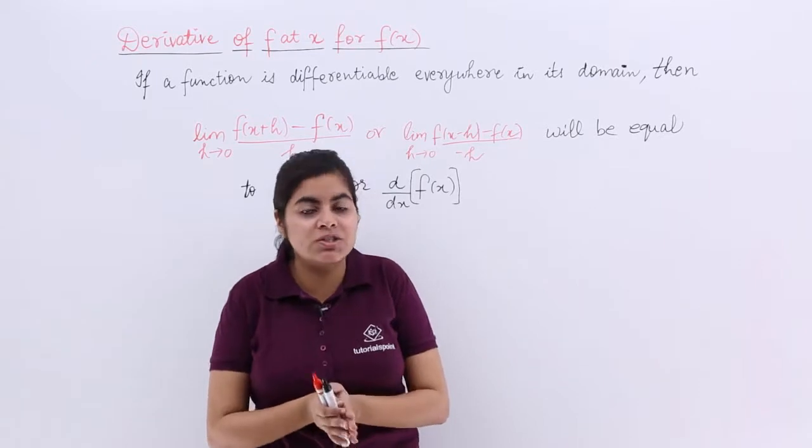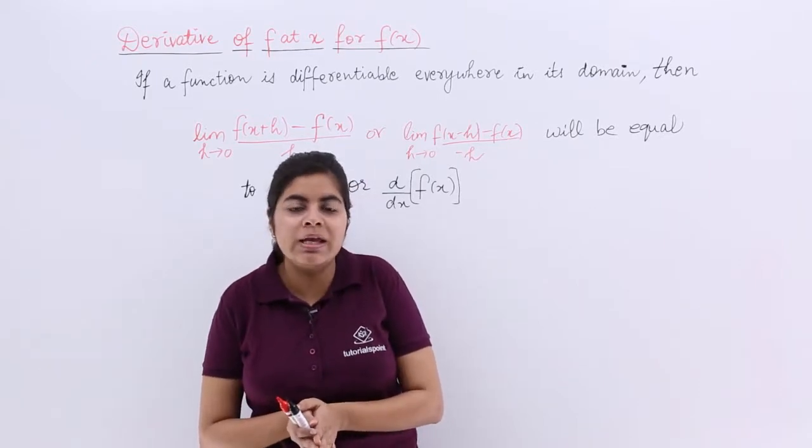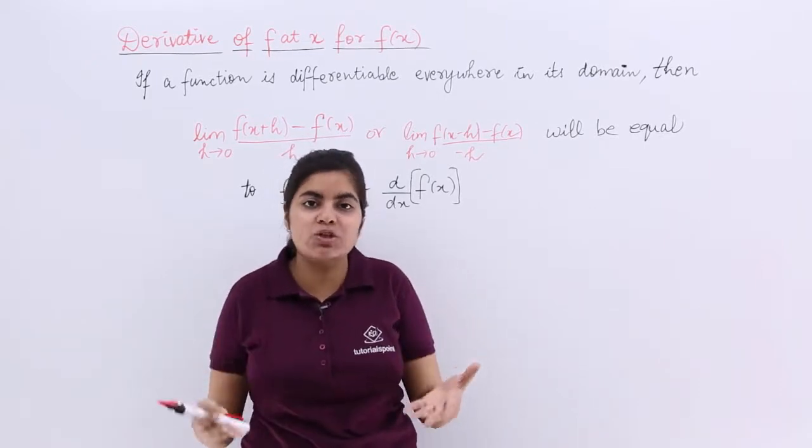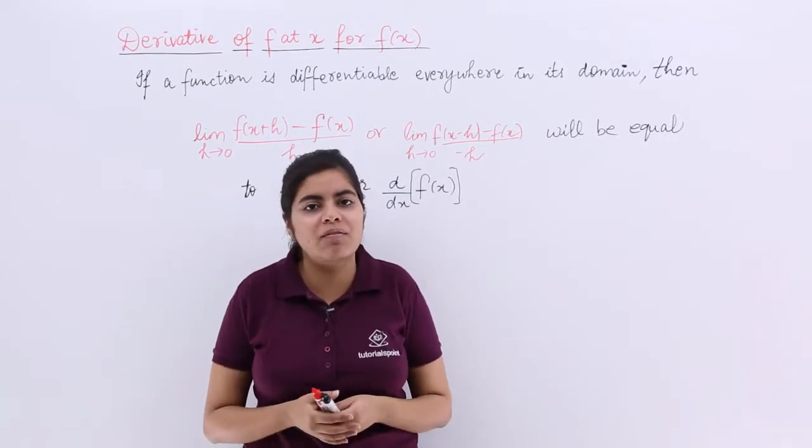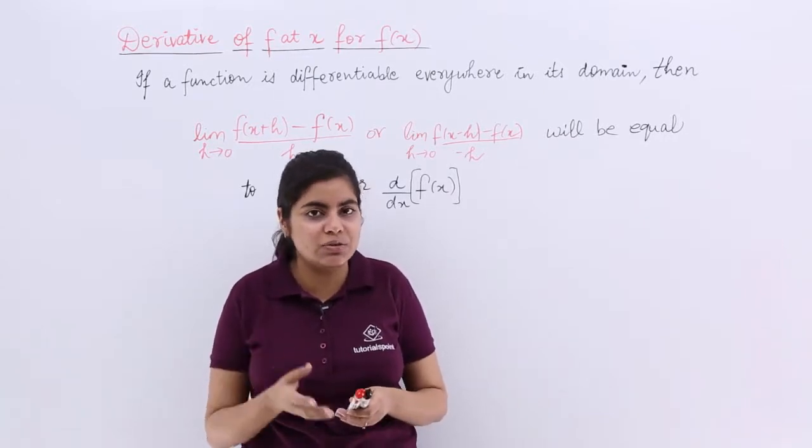Similarly, the derivative of a constant is 0 with respect to a variable. The derivative of a variable with respect to itself is 1 and so on. This we have already done in our previous class of class 11.